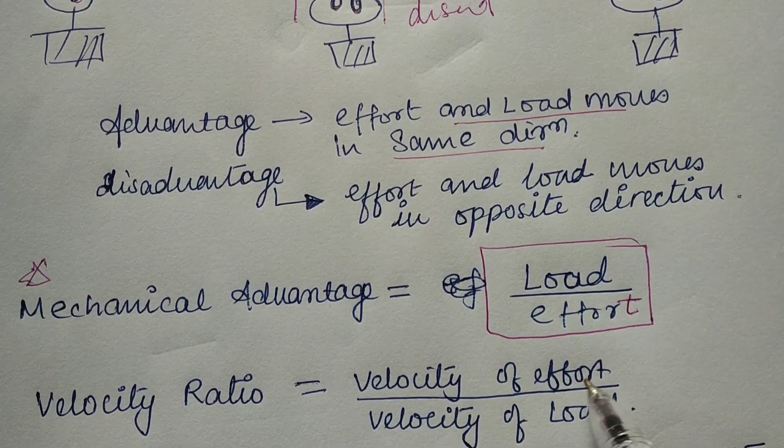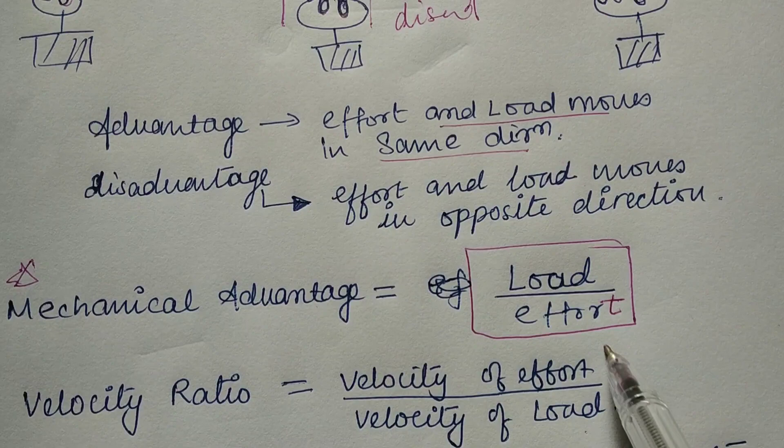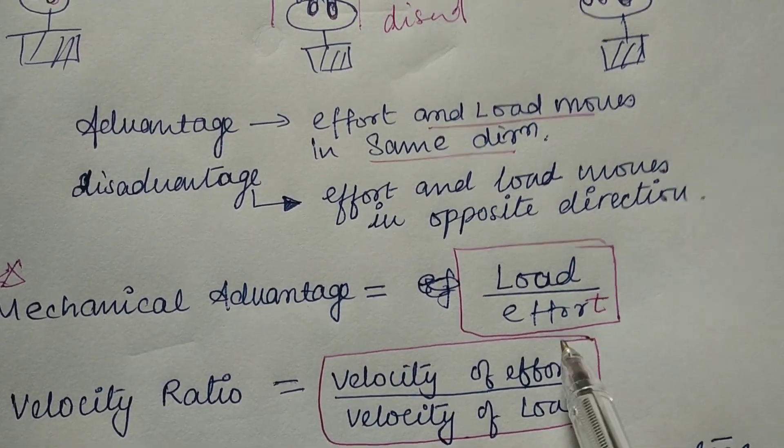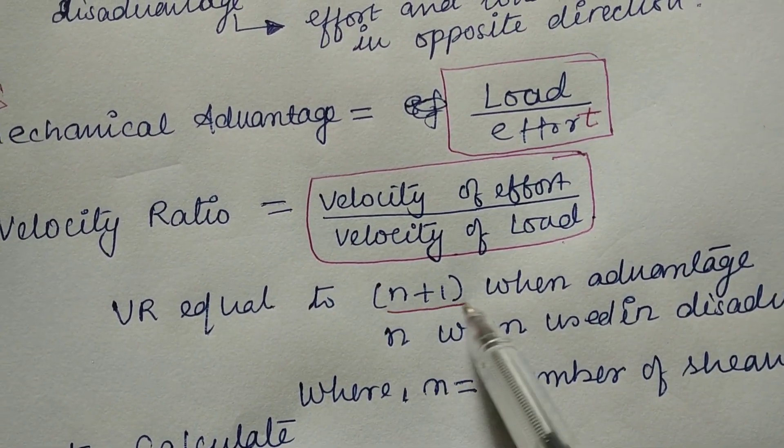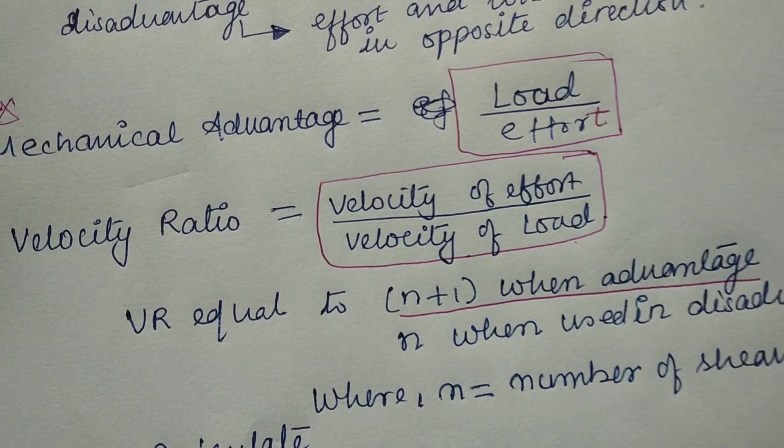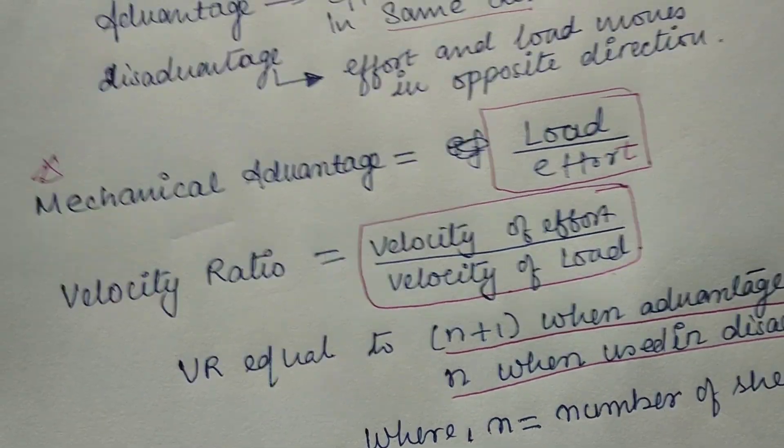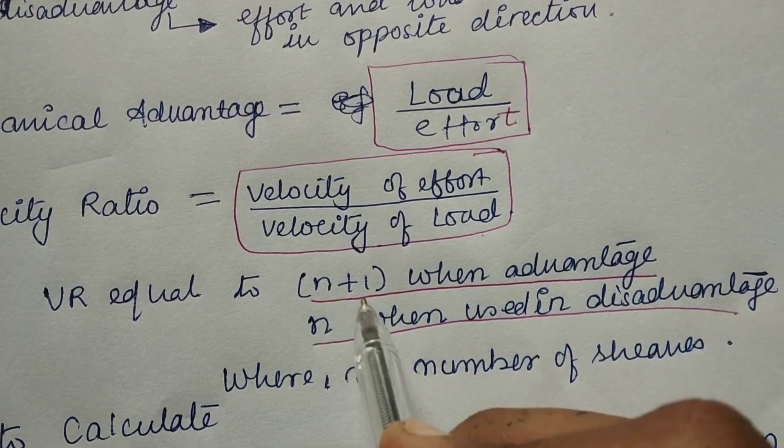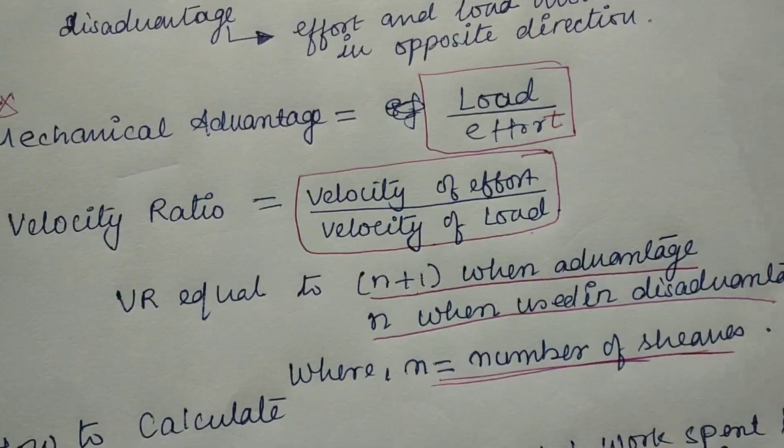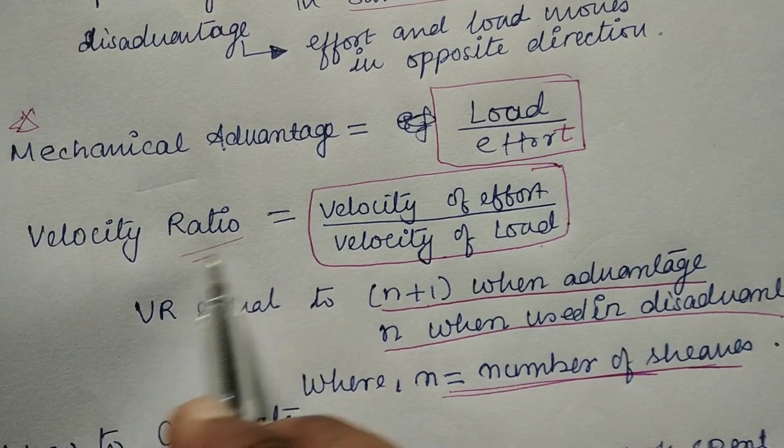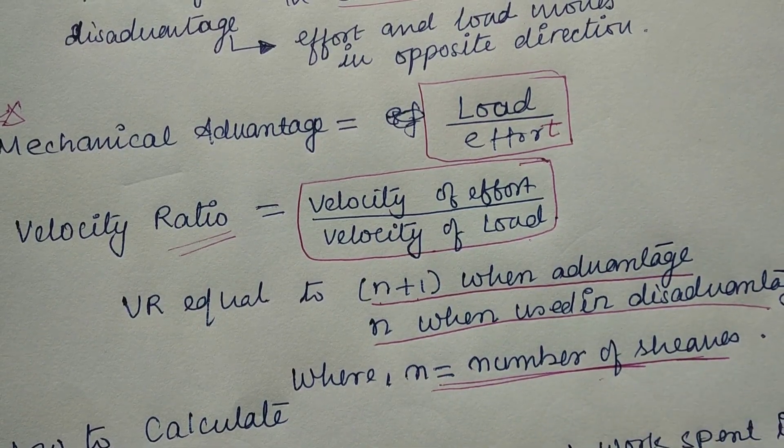Velocity ratio equals velocity of effort divided by velocity of load. You just need to remember that velocity ratio equals n+1 when using the sheaves in advantage, and n when used in disadvantage, where n is the number of sheaves.